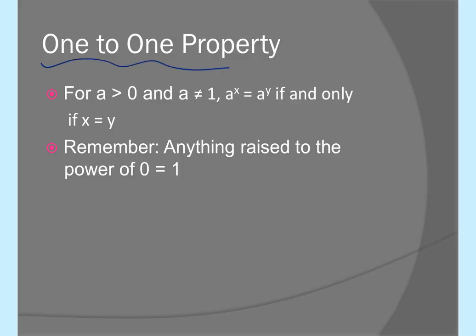The one-to-one property: for any base a > 0, a ≠ 1, a^x = a^y if and only if x = y. This means if you have two expressions on either side of an equal sign with the same base, you can ignore the base and set the exponents equal to each other to find the variable. Also remember: anything raised to the power of zero is one — you have to just know that.